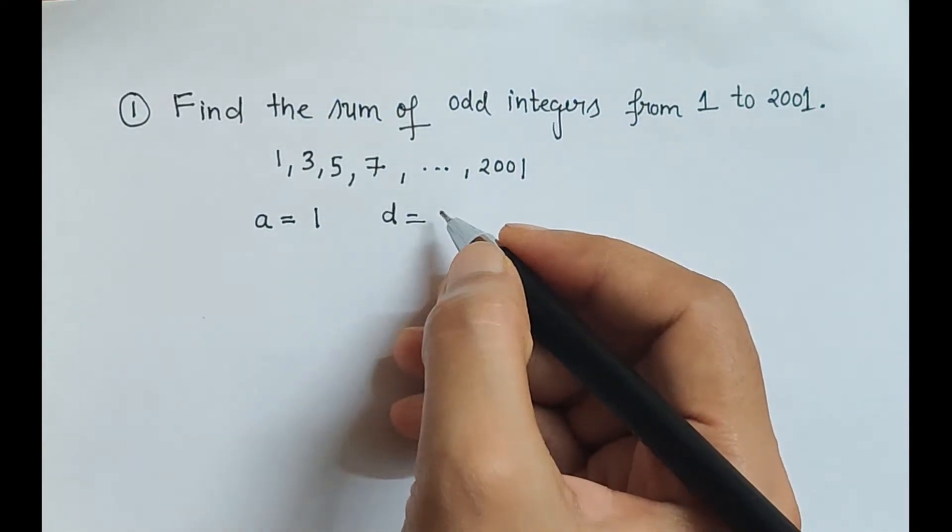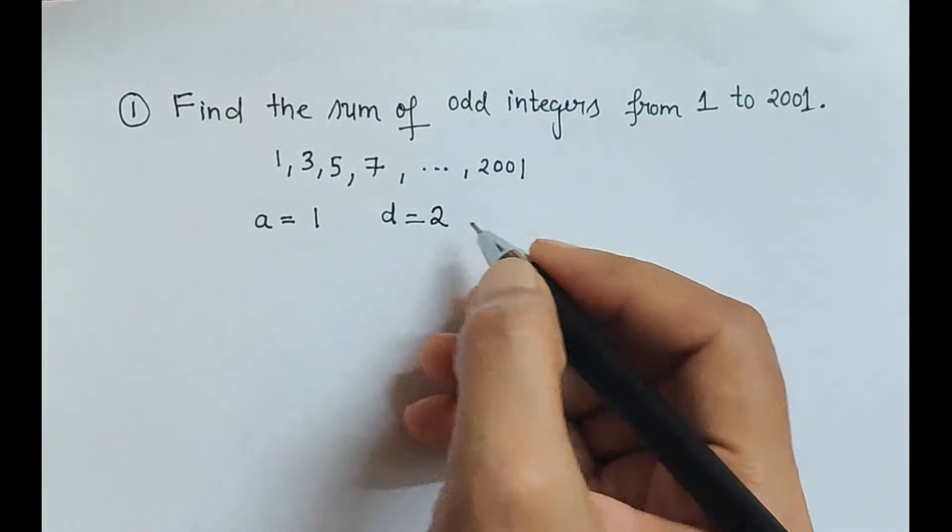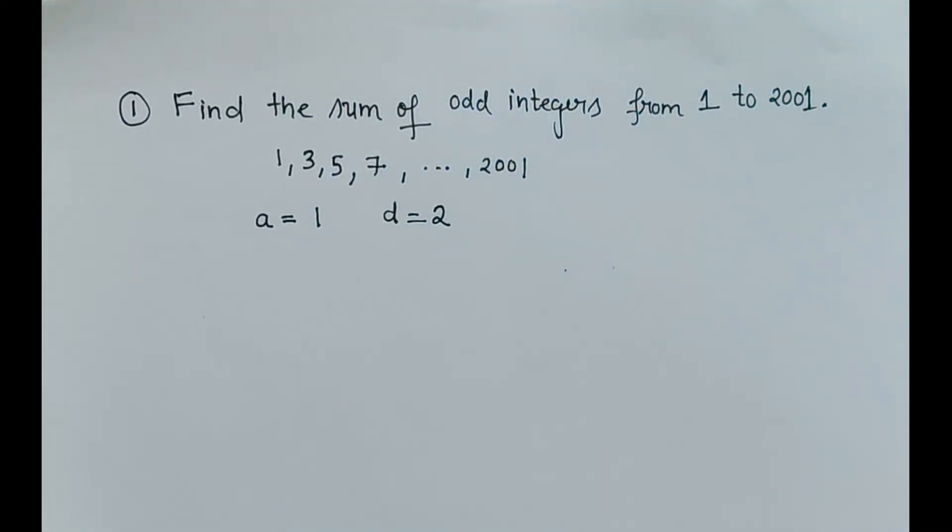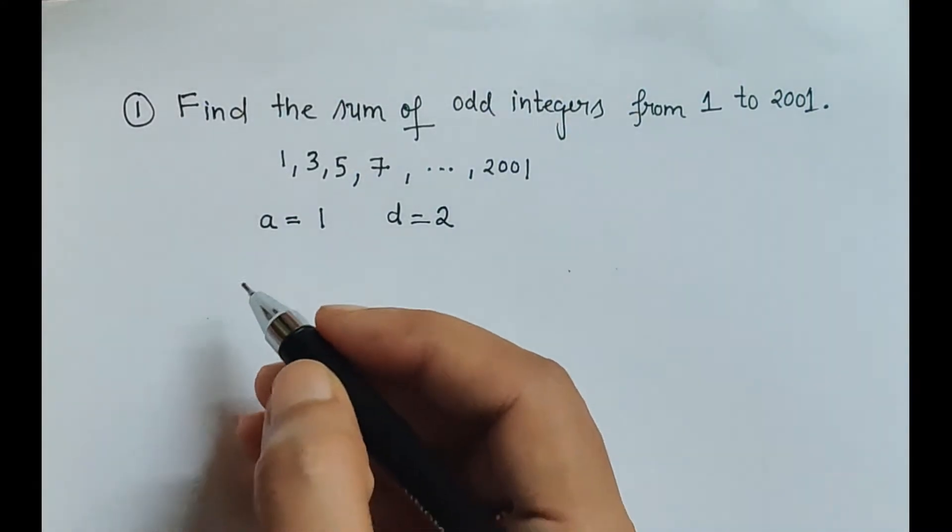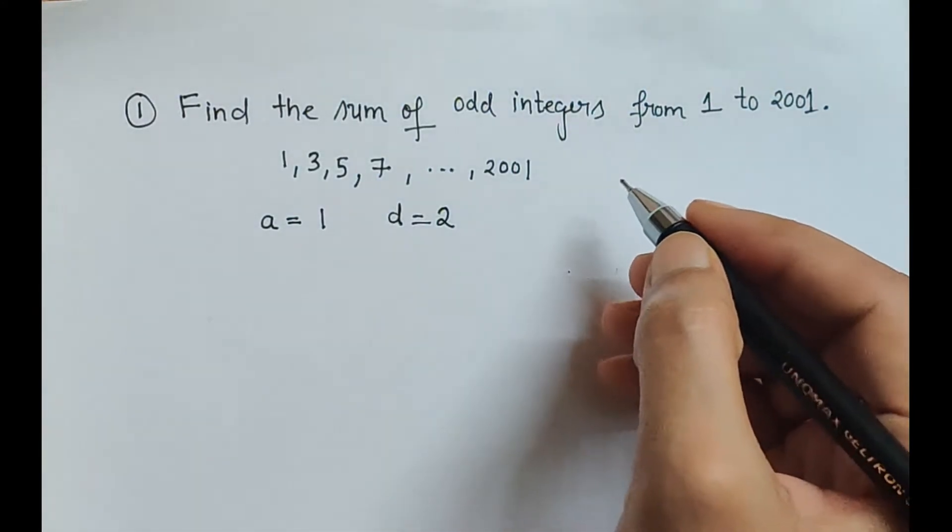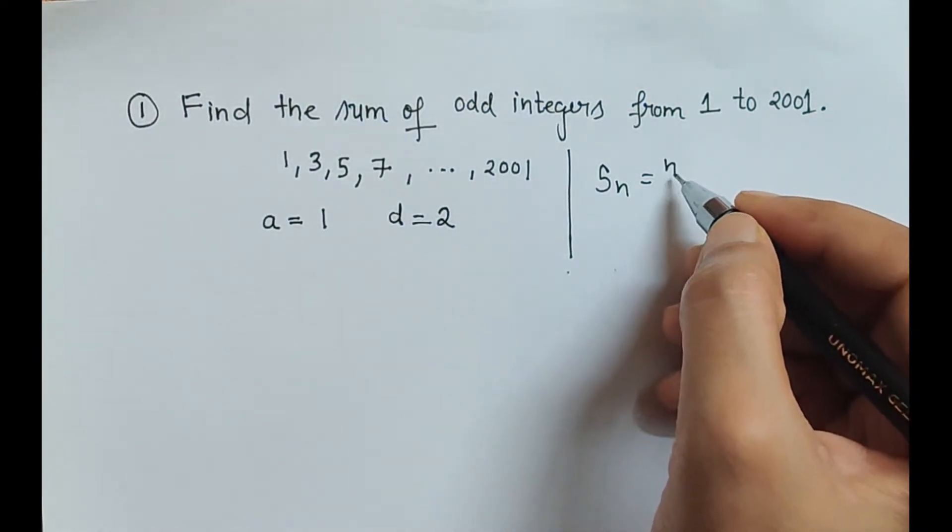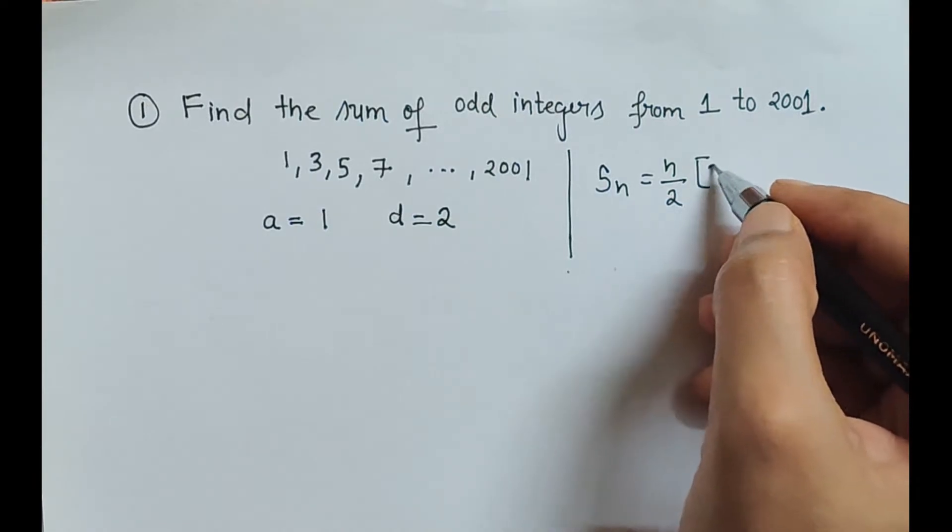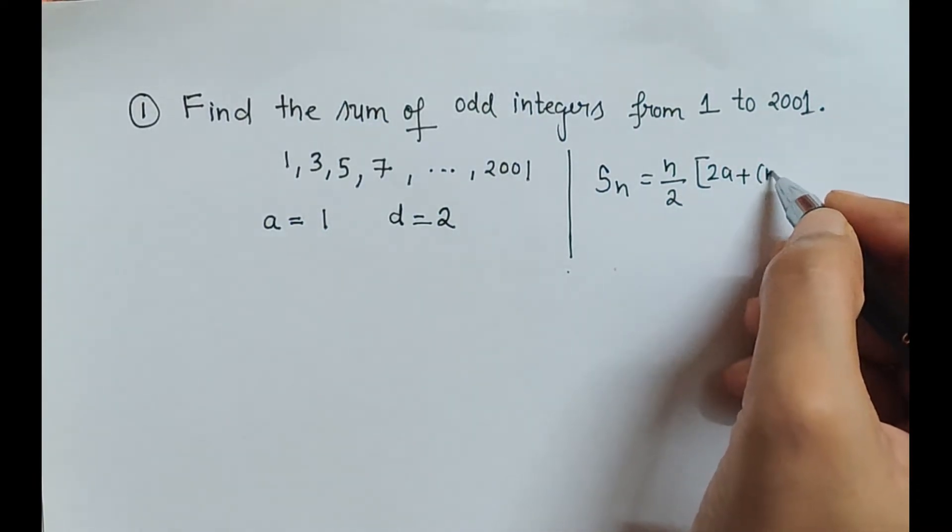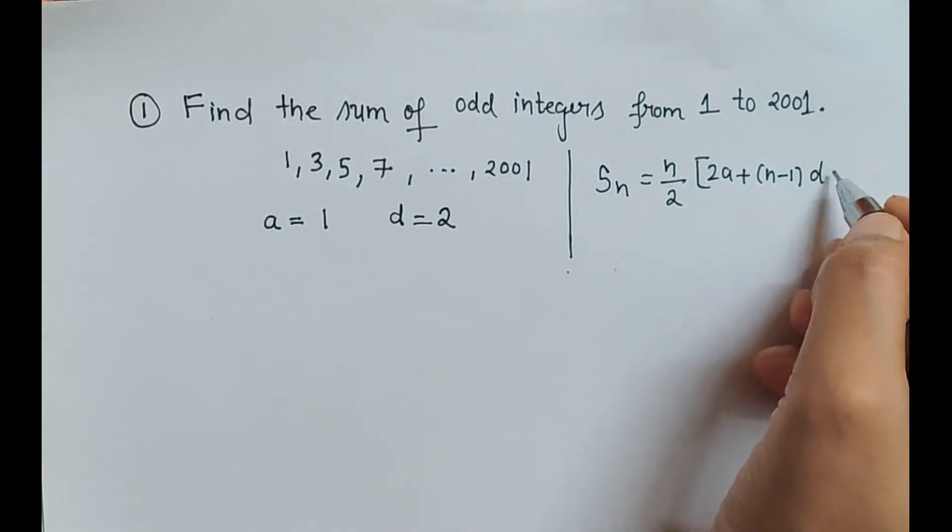So here d is 2. And the question states that find the sum of odd integers, we have to find the sum. So let's write down the formula of sum. The formula is Sn is equal to n upon 2 into 2a plus n minus 1 into d. This is the formula for finding sum up to n terms.